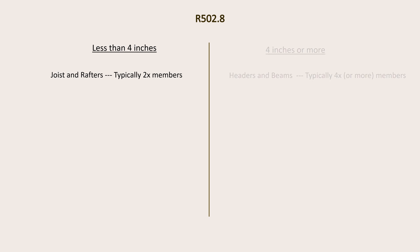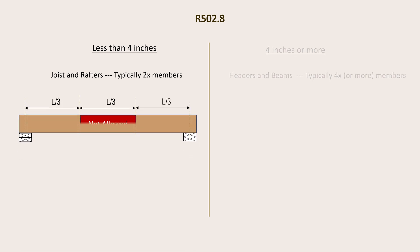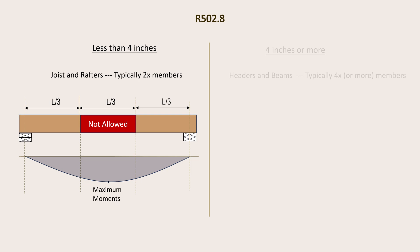Let us start with members that are less than 4 inches thick in nominal dimensions. For uniformly loaded members, as is typical with residential framing, maximum bending moments occur at the mid-span of floor joists and decrease gradually to zero at the supports. By prohibiting notching in the middle one-third of the joist, the IRC ensures that joists will not be notched at locations experiencing the highest stress demands.